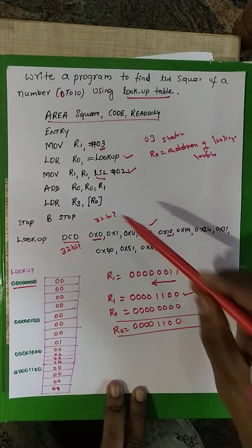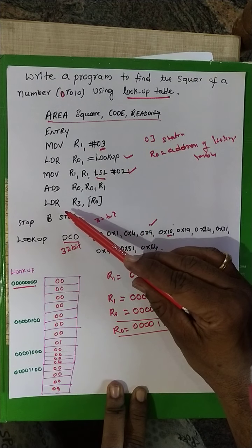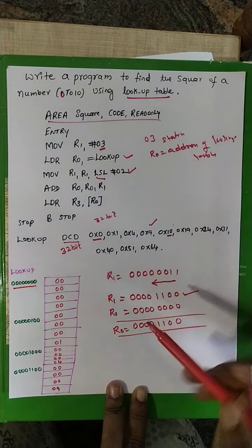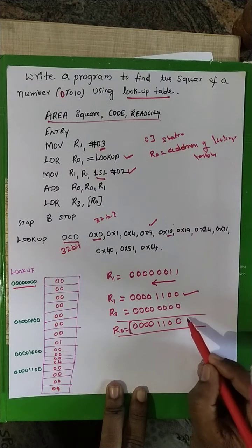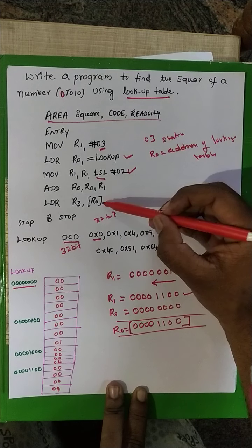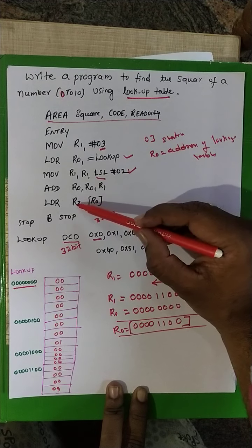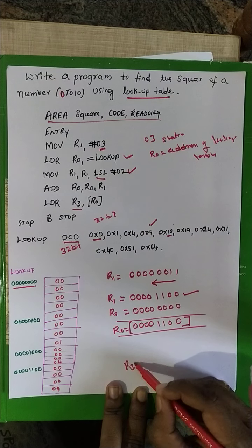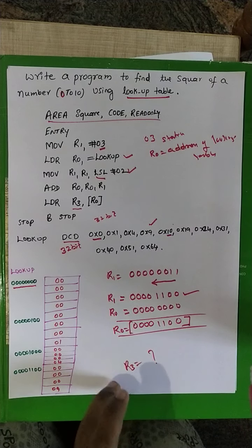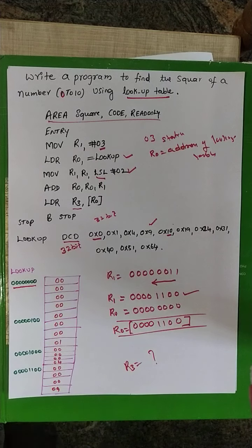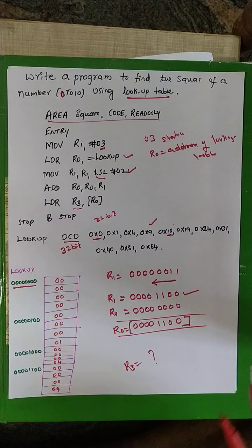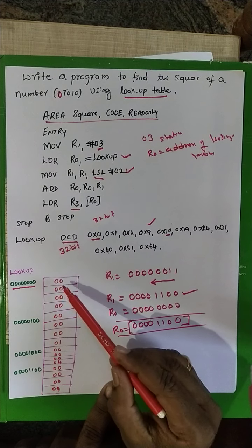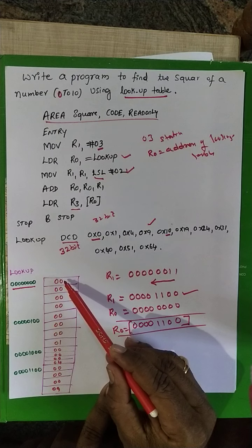The next instruction is: LDR R3, [R0]. R0 is the memory address, and the content stored at that memory location is moved into register R3. The first value (square of 0) occupies 4 memory locations, since each memory location is 8 bits and the data is 32-bit.